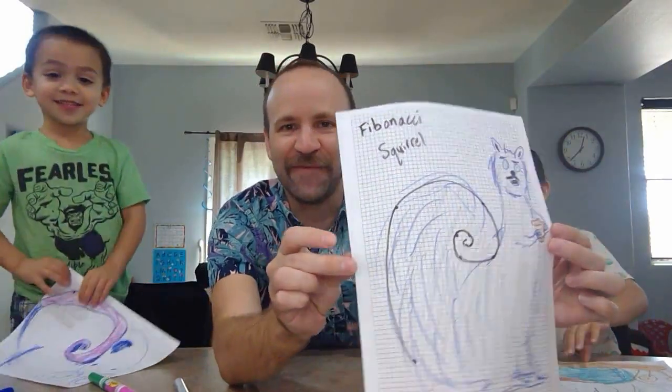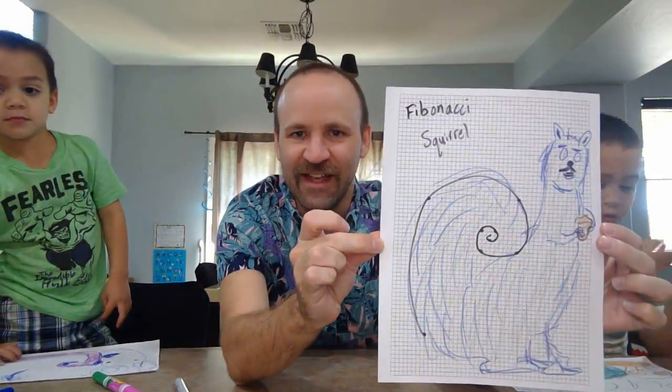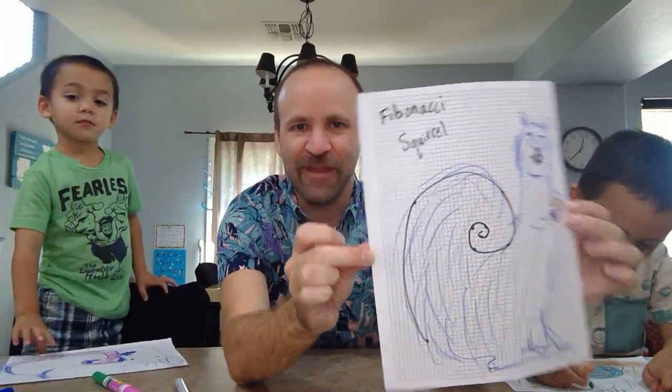All right. Well, I think we're done. I'll show you what I made. I made a Fibonacci squirrel. You can see he's got a delicious acorn there, so he's pretty happy about that.